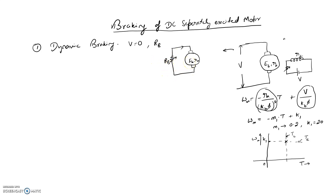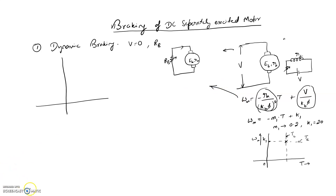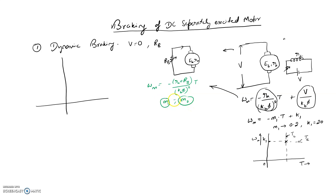The value of RB to be chosen is very important. With V equal to 0 and RB added, the new equation becomes: Omega M equals minus (RA plus RB) divided by (KB·Φ)² multiplied by T. The slope earlier was M1, and now it has been changed to M2. M2 is obviously greater than M1, meaning the slope is steeper.